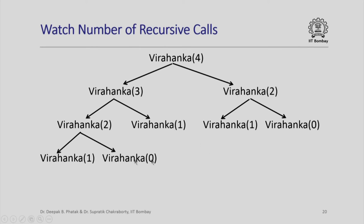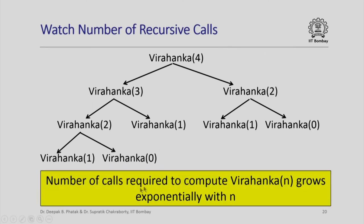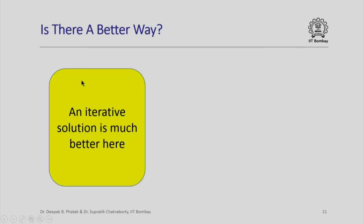In this tree-like structure, Virahanka(2) was computed twice — the entire effort of computing it is replicated. It is an interesting exercise to show that the number of calls required to compute Virahanka(n) using this recursive function grows exponentially with n. This is not good because it means we cannot compute Virahanka numbers for large values of n.